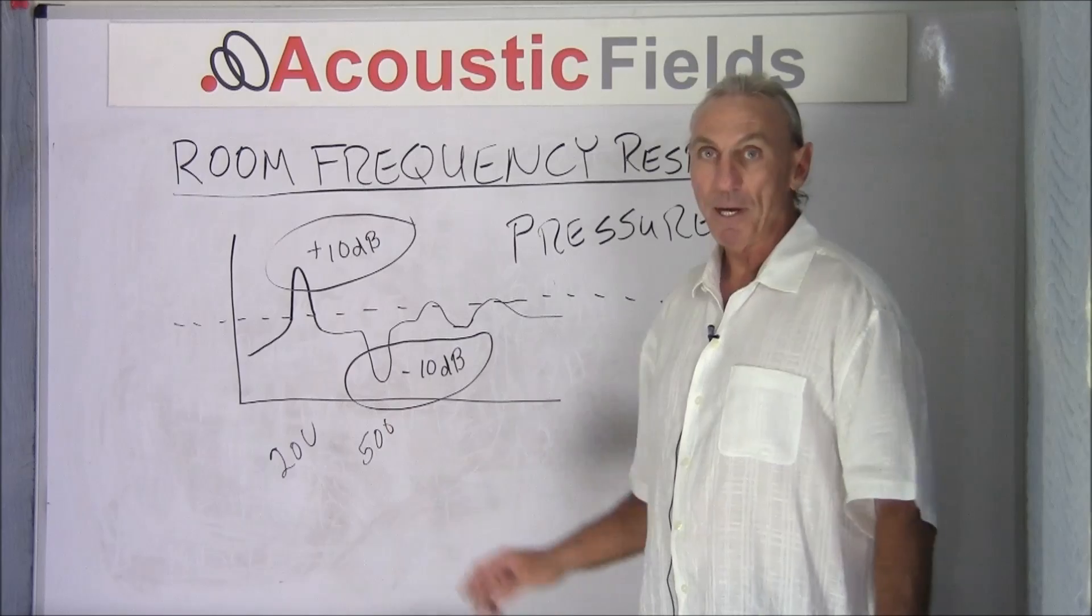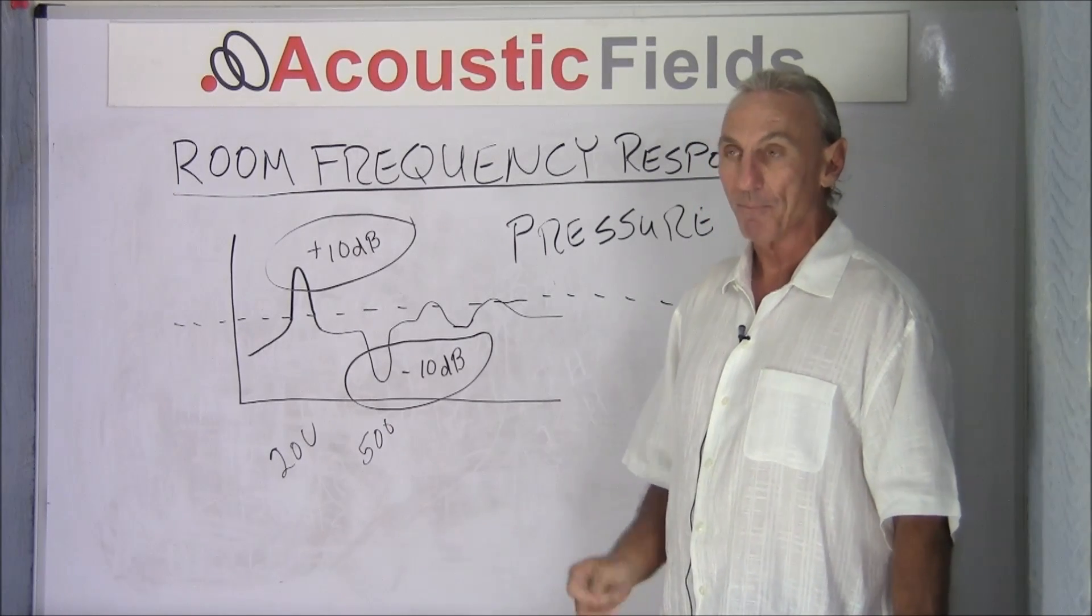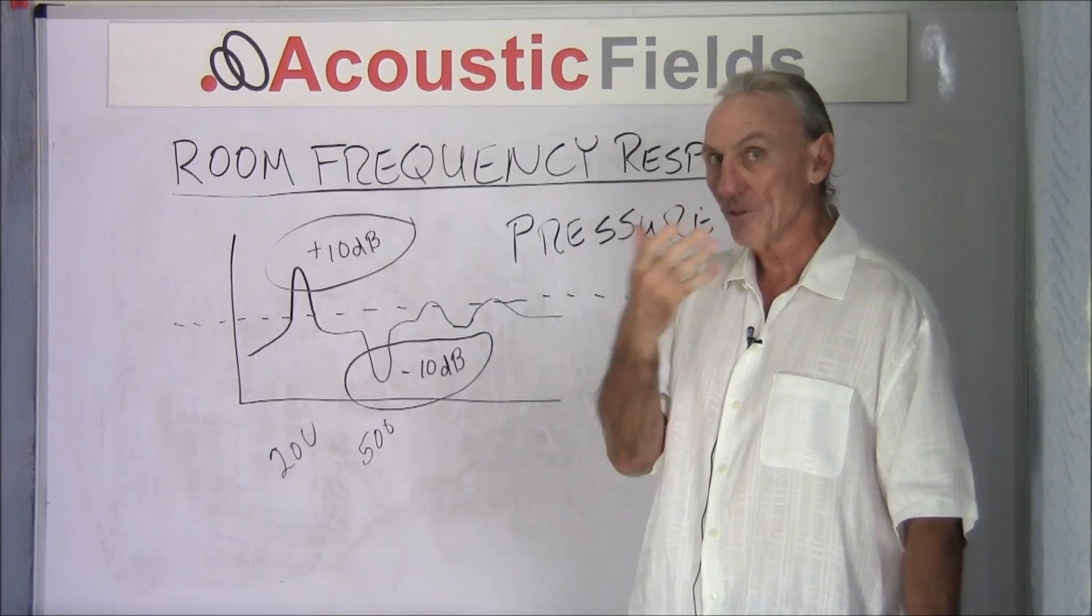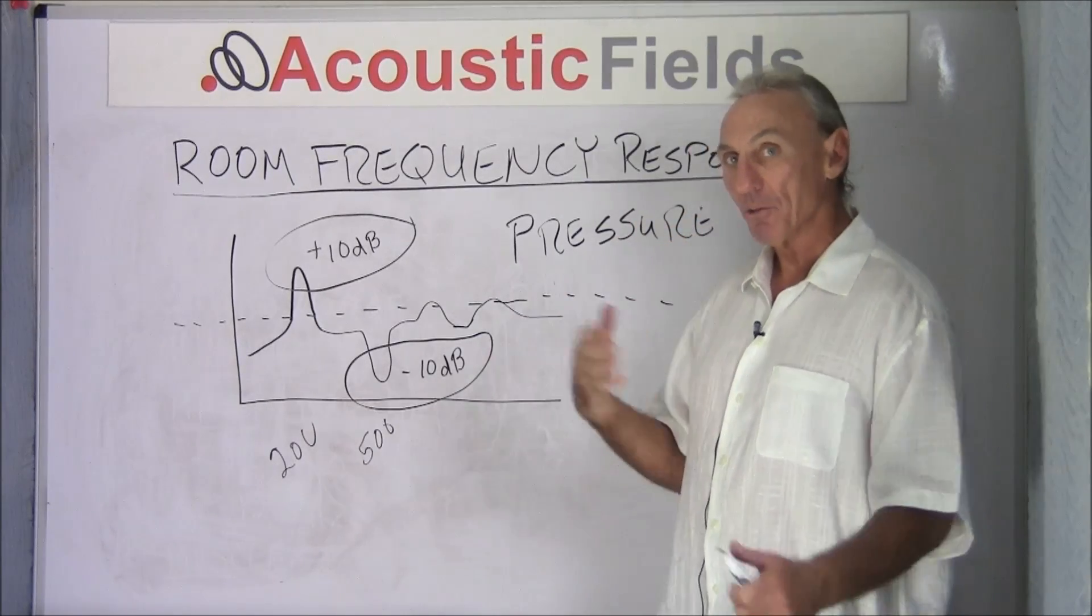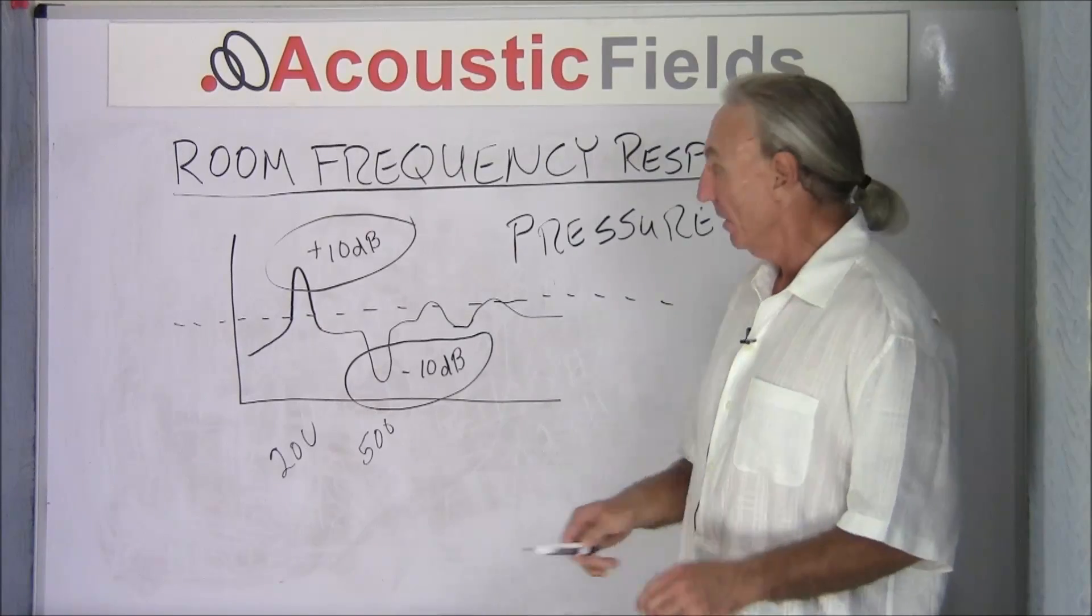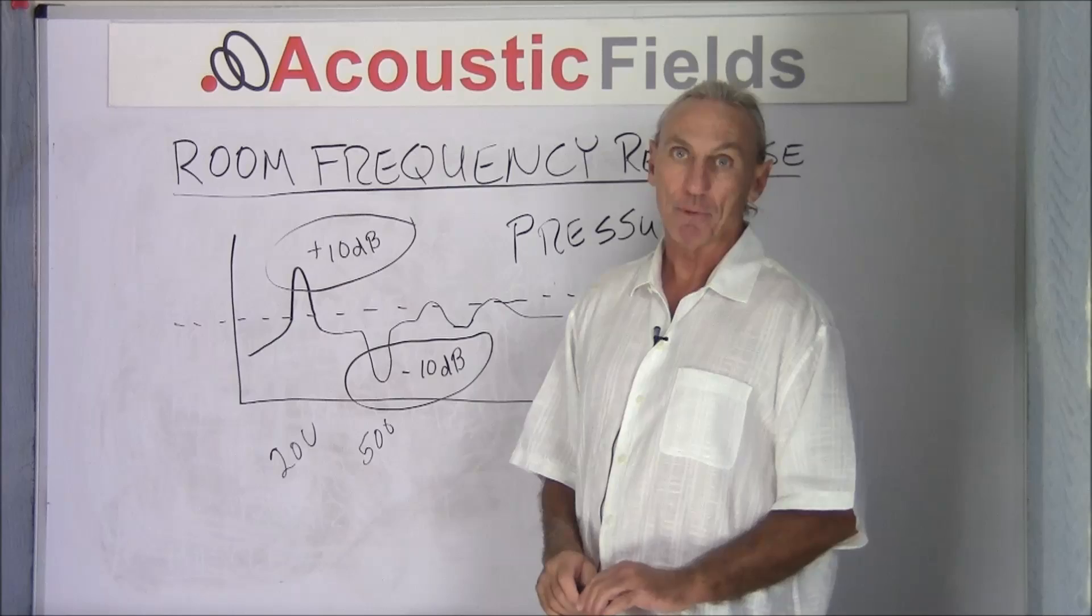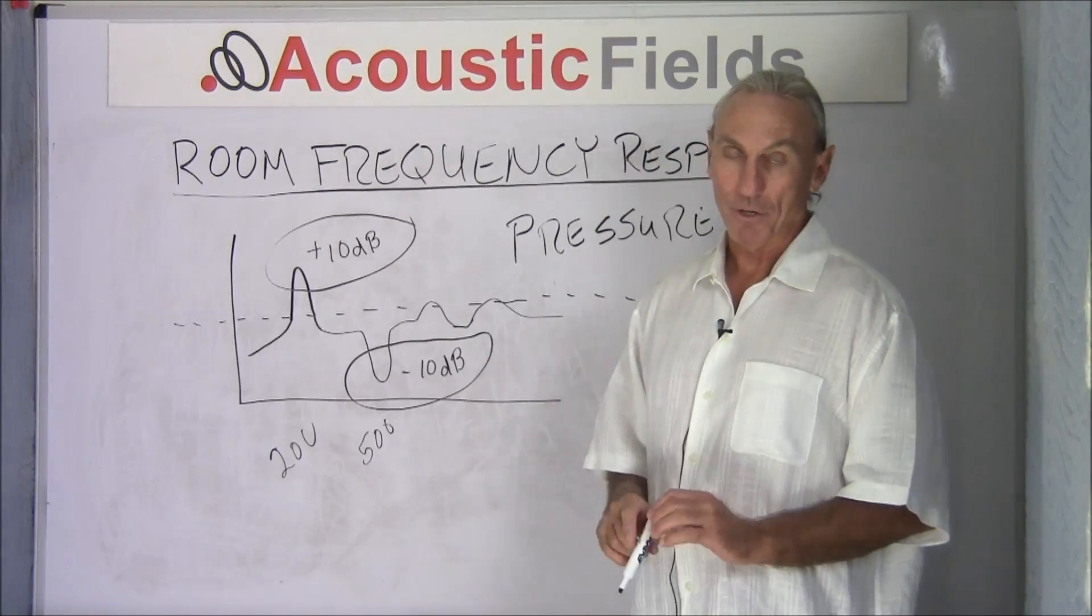So both of these peaks and troughs are reactions to pressure. You squeeze your lips together and then blow out and your cheeks expand. That's how your room is reacting to pressure. That's how the room is reacting to 200 cycles in our example here. So it's all about pressure.